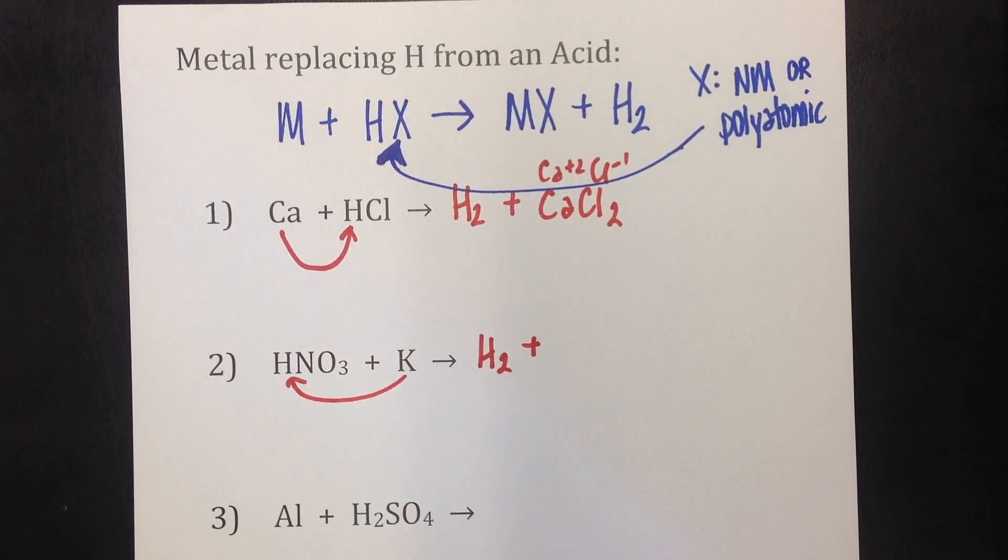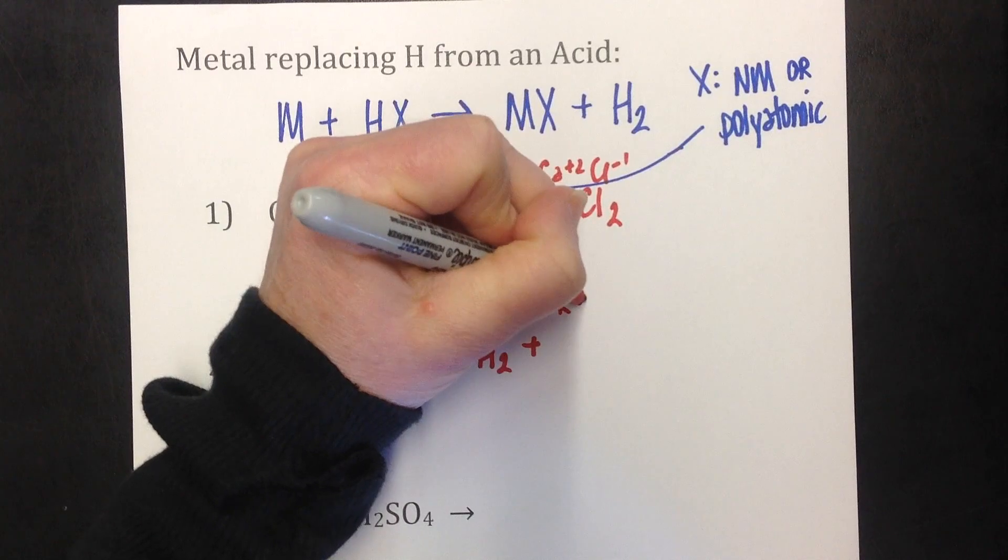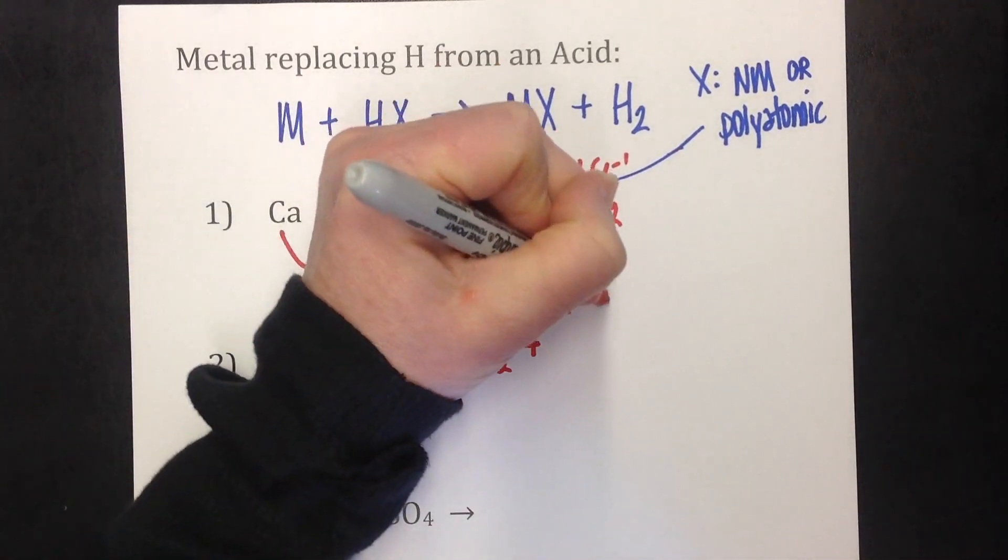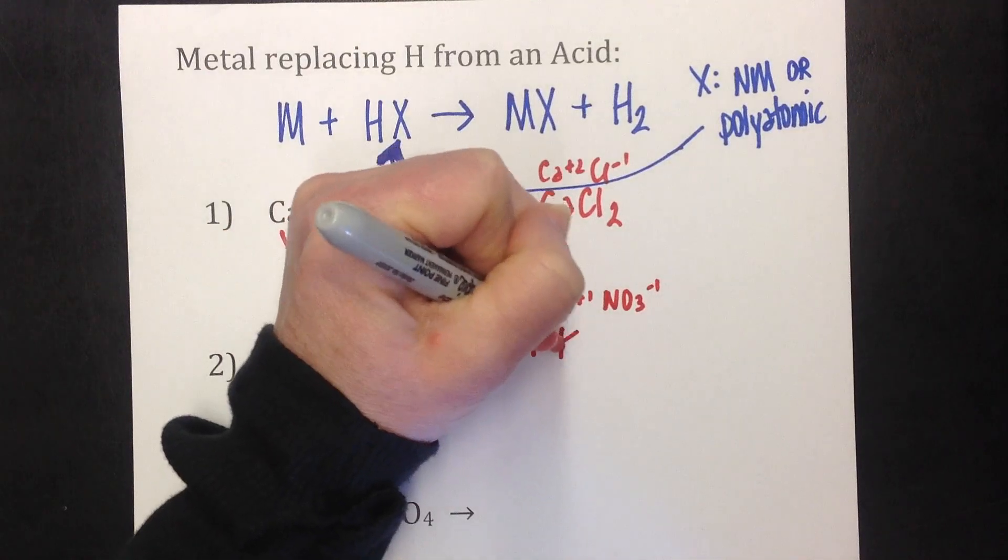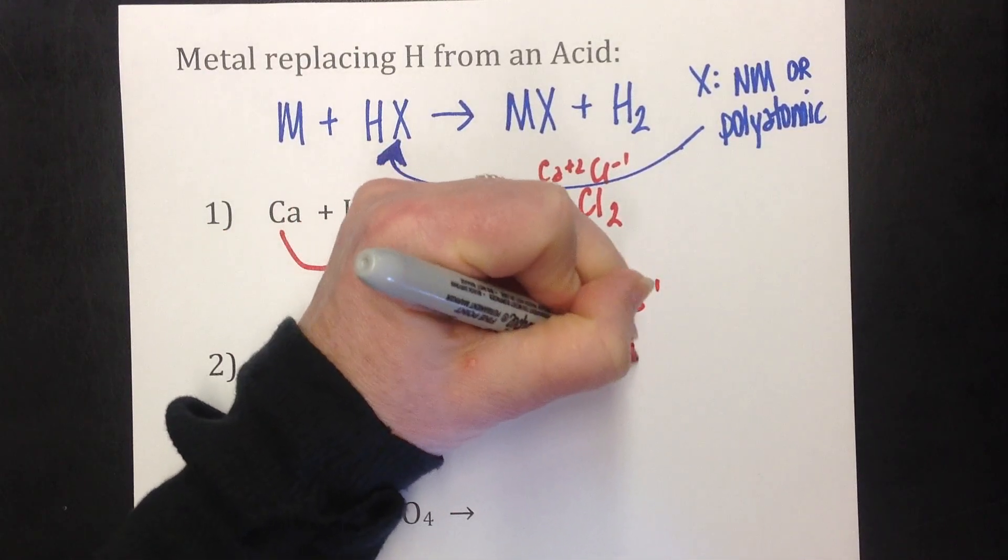Remember, we always write the cation first. So potassium has a plus one, nitrate's NO3 minus one, and that gives you KNO3.